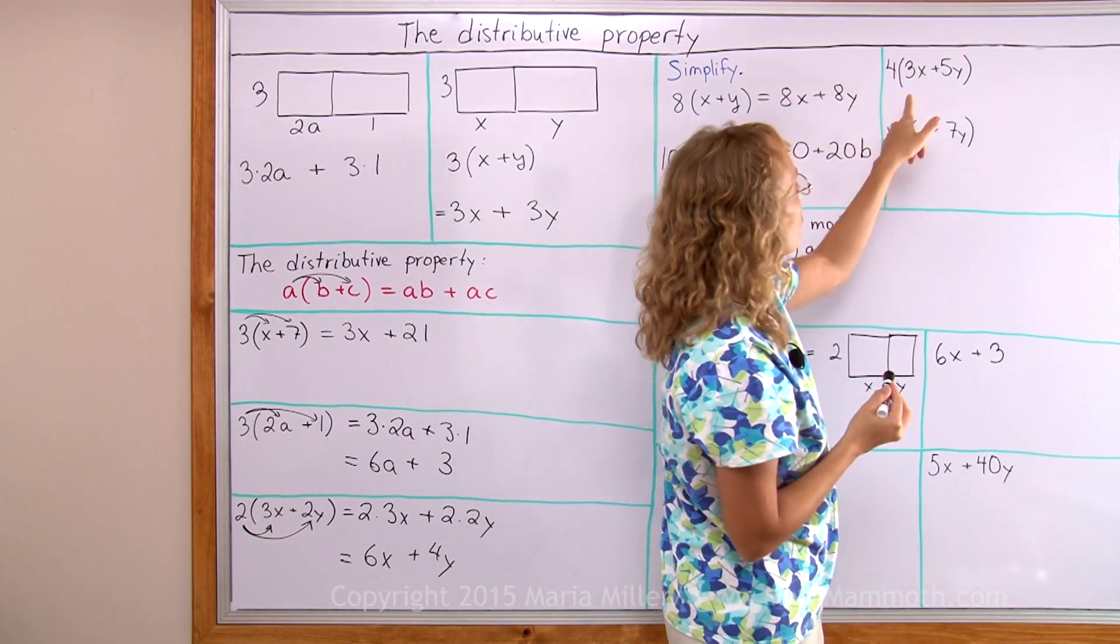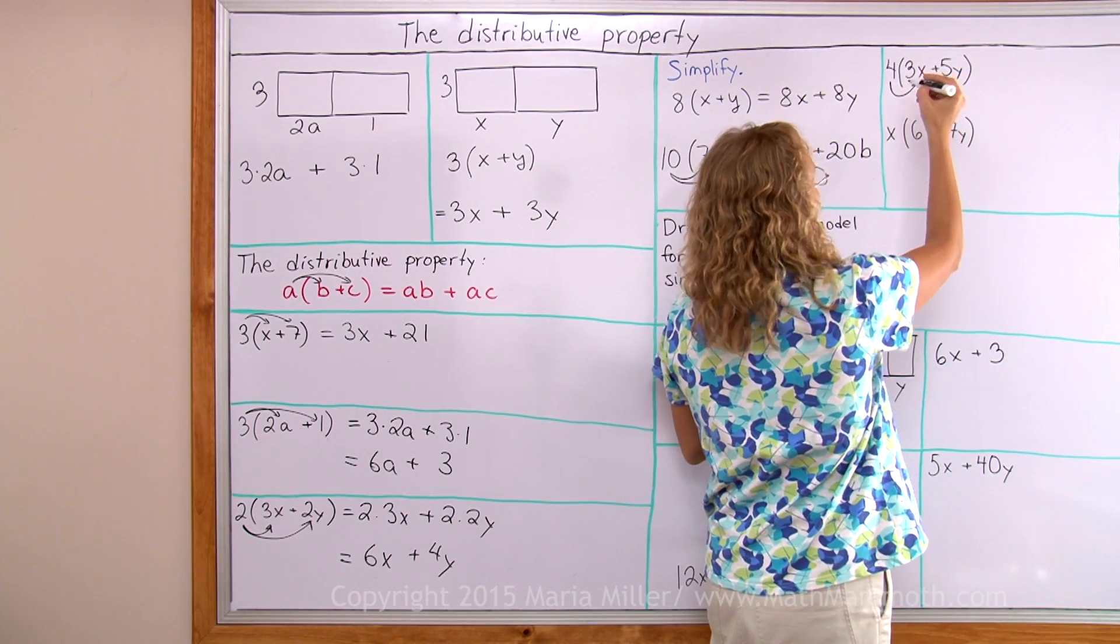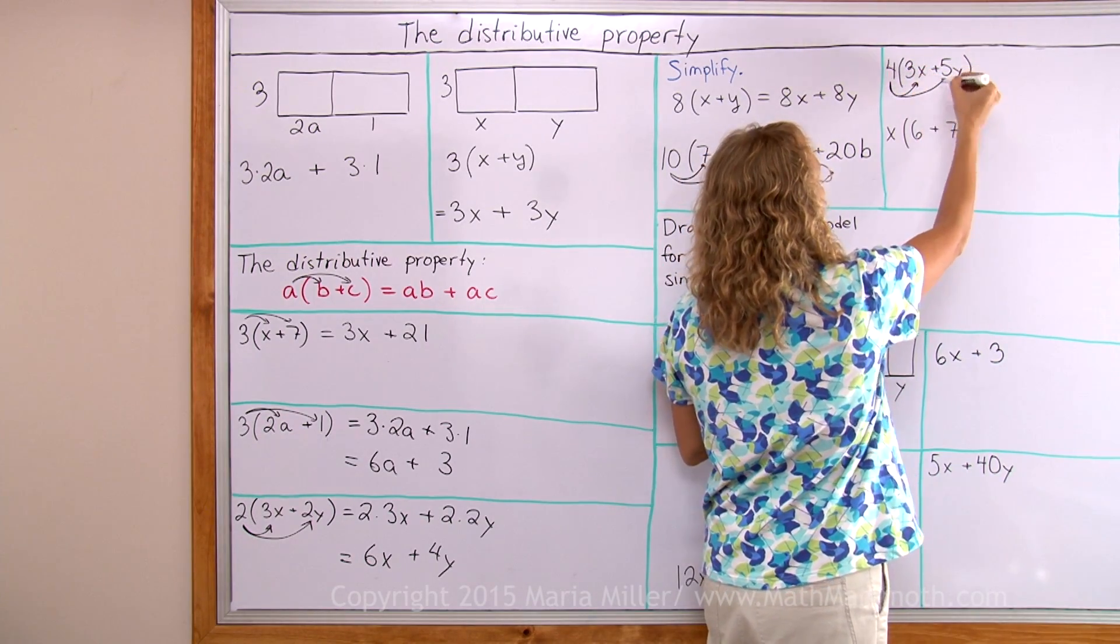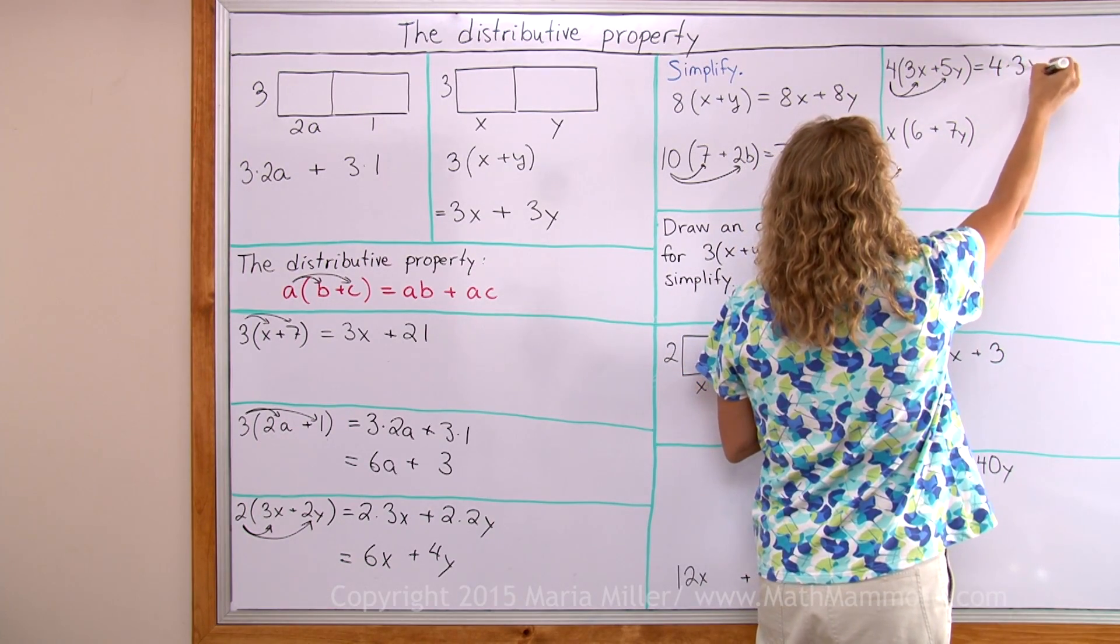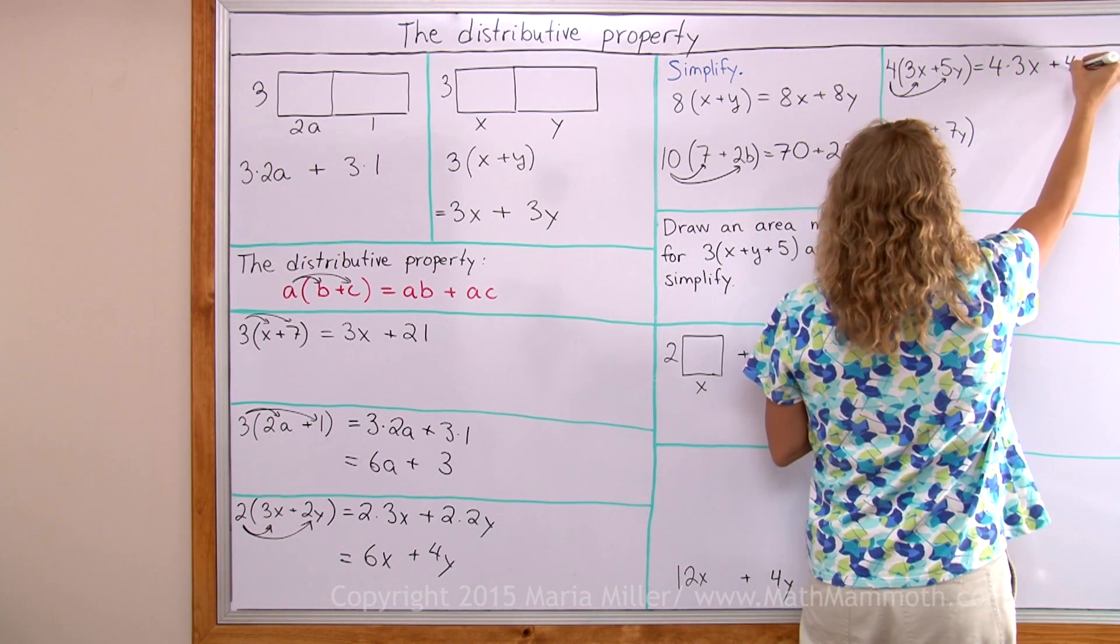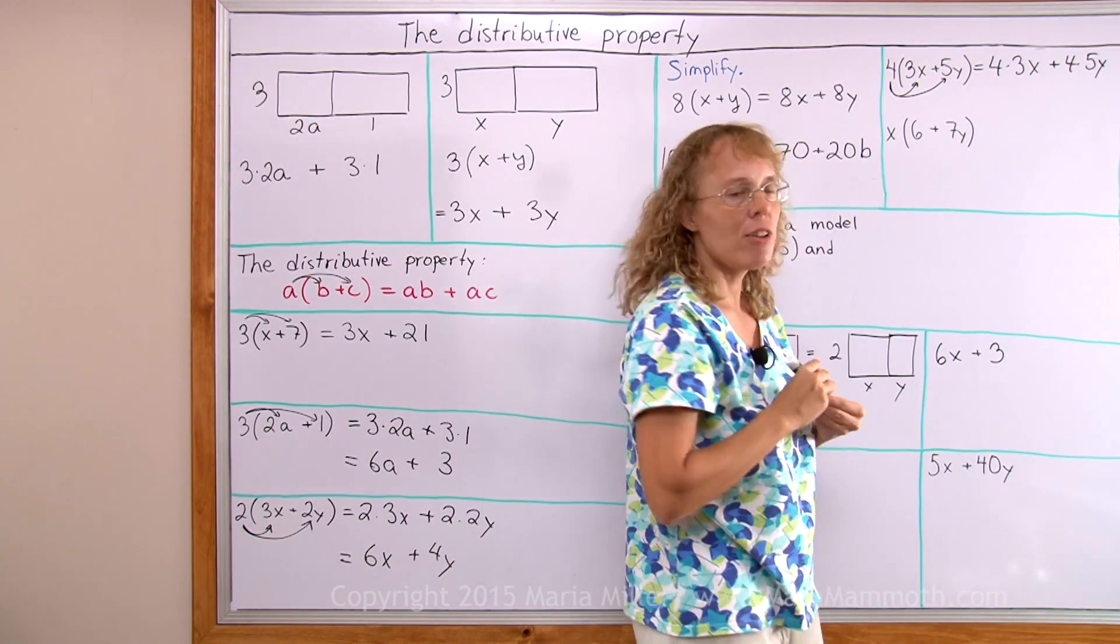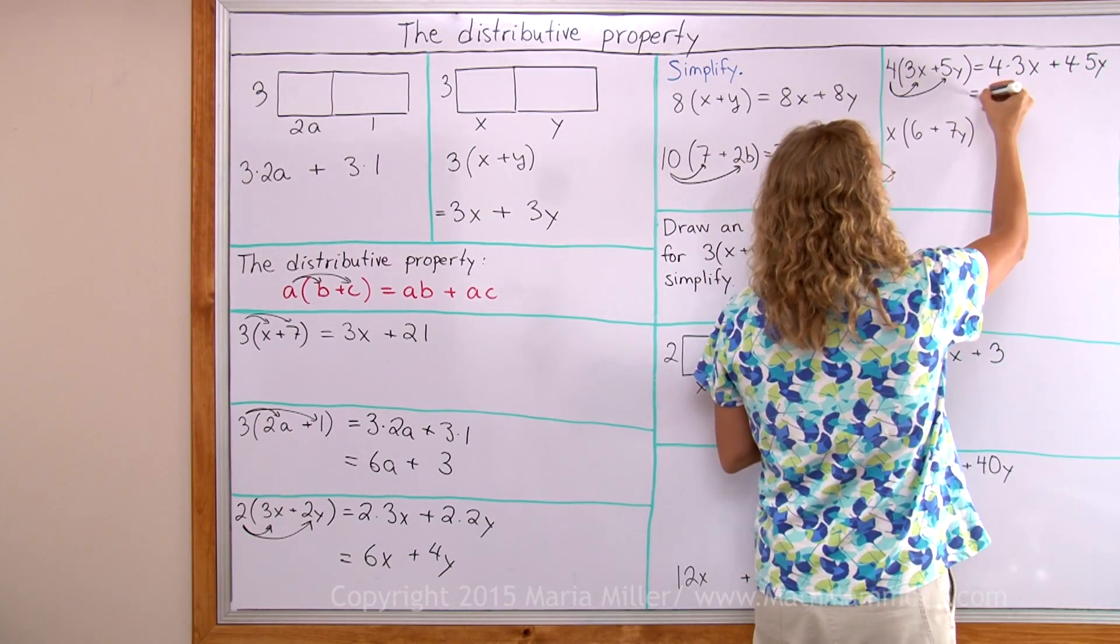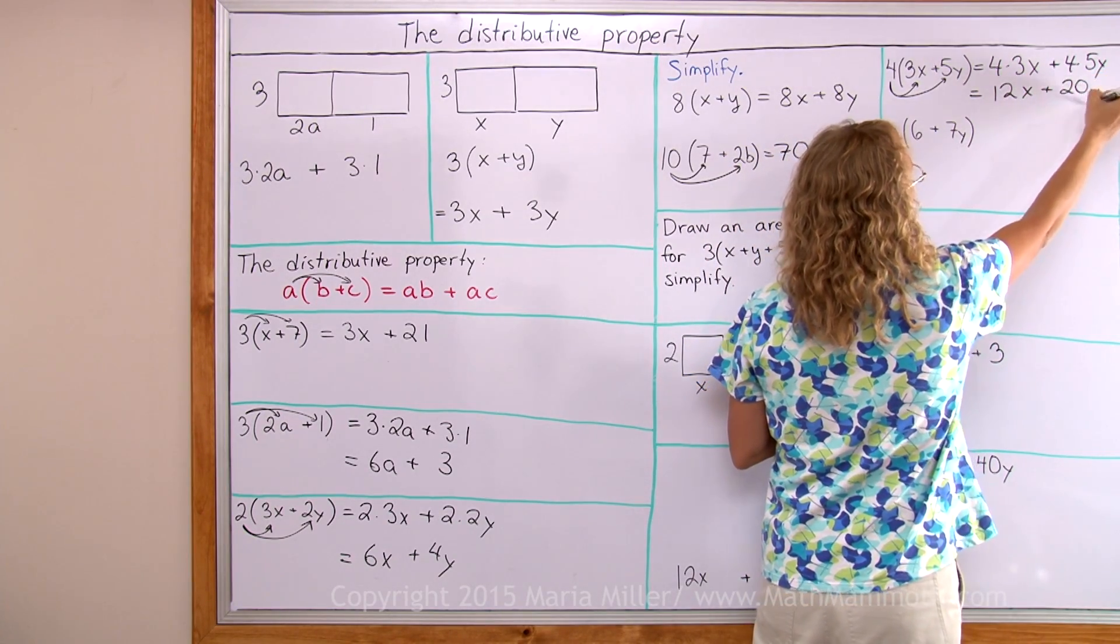Over here looks more complicated but it isn't really. 4 times 3x and then 4 times 5y. Now I multiply 4 times 3, that's 12. So this first one is 12x and this one is 20y.